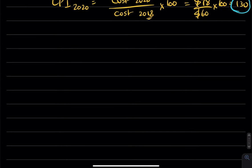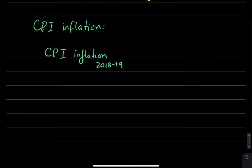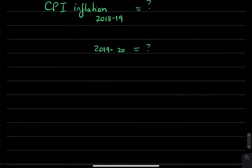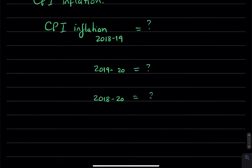The next thing we want to do is calculate CPI inflation. And so, I would like you to calculate what is CPI inflation between 2018 and 2019. What does that equal to? Between 2019 and 20? What does that equal to? And also, 2018 and 2020. What does that equal to?